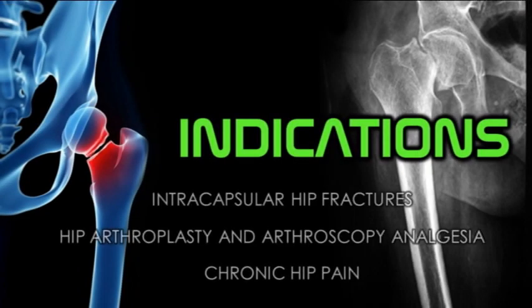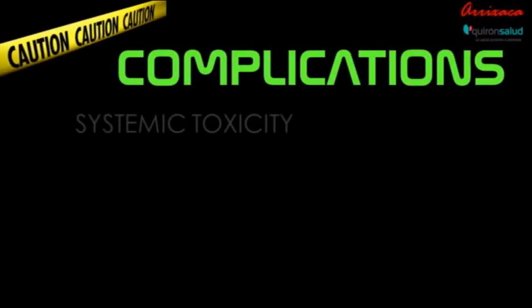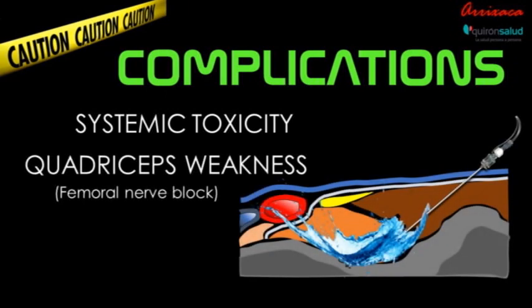The PENG block is indicated for treating pain after intracapsular hip fractures, as a motor-sparing block for hip surgery, and for chronic pain. No systemic toxicity has been described, although quadriceps weakness has been reported secondary to local anesthetic spread to the femoral nerve. We recommend not exceeding the described volume, and if utilizing a catheter, we recommend starting the infusion rate at 6 milliliters per hour or less.